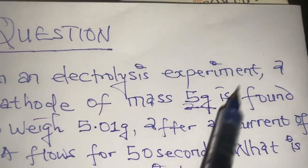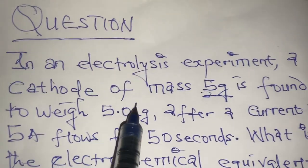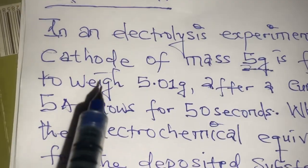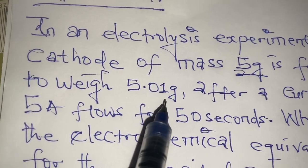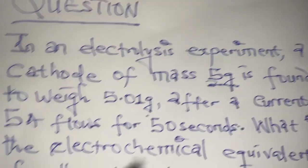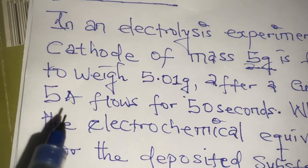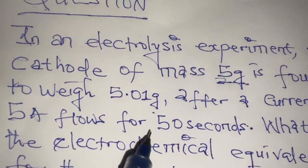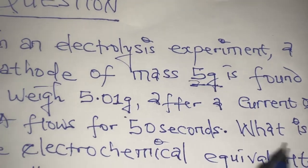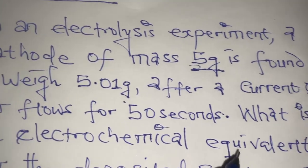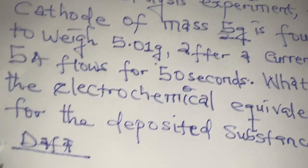In an electrolysis experiment, a cathode of mass 5 grams is found to weigh 5.01 grams after a current of 5 Ampere flows for 50 seconds. What is the electrochemical equivalent for the deposited substance?